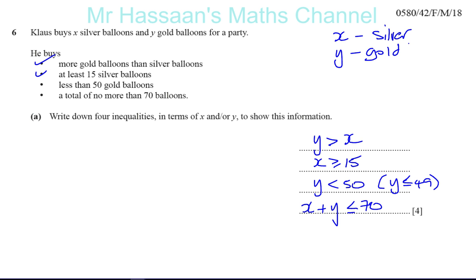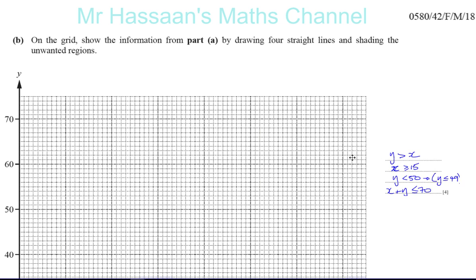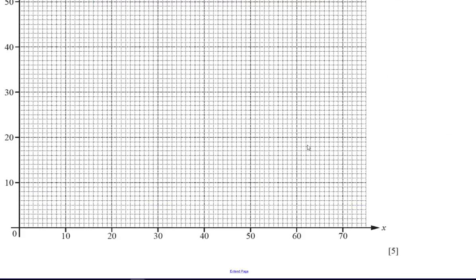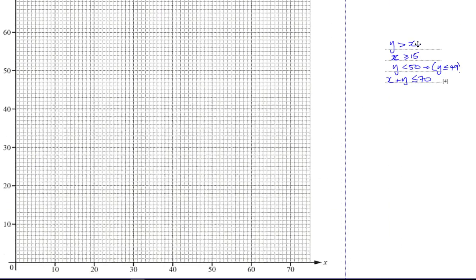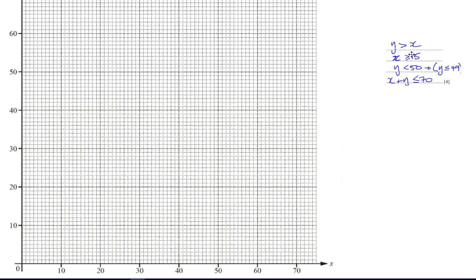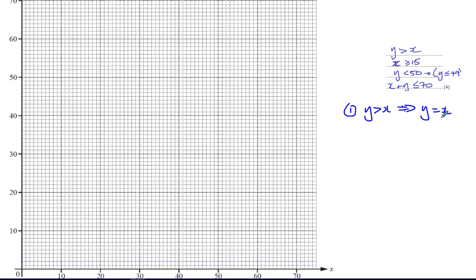Moving on to part B, we have our inequalities and we're asked to plot them on the graph. Starting with Y > X — the boundary line for this is Y = X, which I need to draw before I can show the region. The region is defined by an area, but the area has a boundary where it starts, defined by the line Y = X.